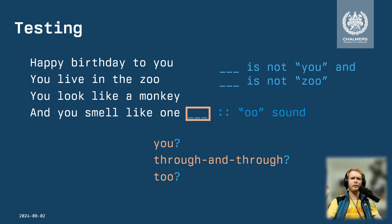Well, it has the 'oo' sound. But if we sing it — 'and you smell like one through and through' — we have to kind of sing it a bit fast, so it doesn't quite fit what we want from this song.